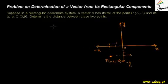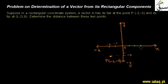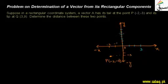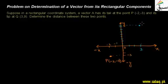Now I will draw the Q point, which is (3, 9). The X value is 3, so I count 1, 2, 3 on the X axis. The Y value is 9, so I go up 1, 2, 3, 4, 5, 6, 7, 8, 9 on the Y axis. I draw the Q point at coordinates (3, 9), representing its X and Y values.